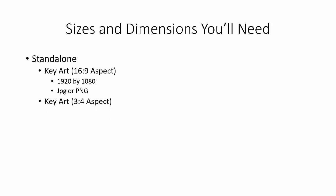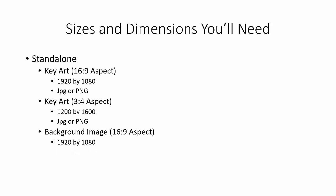You'll also have another key art piece for standalone videos, this time a 3x4 aspect ratio — so not 4x3. That means the art will be 1200x1600, JPEG or PNG. Pay attention to that, as it's a little different from the other size. There's also space for a background image at 1920x1080, JPEG or PNG, optional and designed only to convey mood on certain devices.